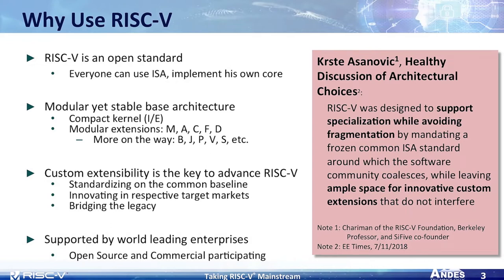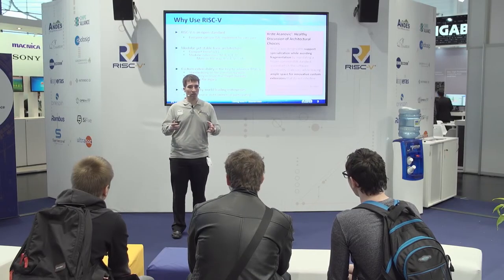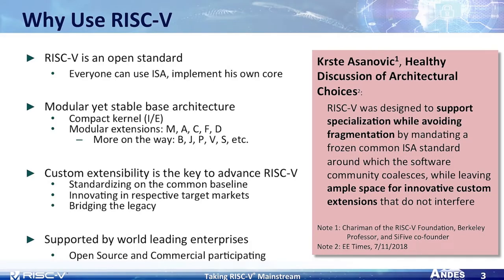Why should you choose RISC-V for AIoT? RISC-V is an open standard so everyone can use it and make their own implementation. Second, RISC-V is a modular yet stable architecture, meaning you can combine different things and make the CPU specific for your use case. It also has domain-specific architecture, which allows you to add your own instructions into your RISC-V core and differentiate from the market. And last but not least, RISC-V is supported by world-leading companies like Nvidia, Google, and Western Digital, which grows and strengthens the ecosystem.